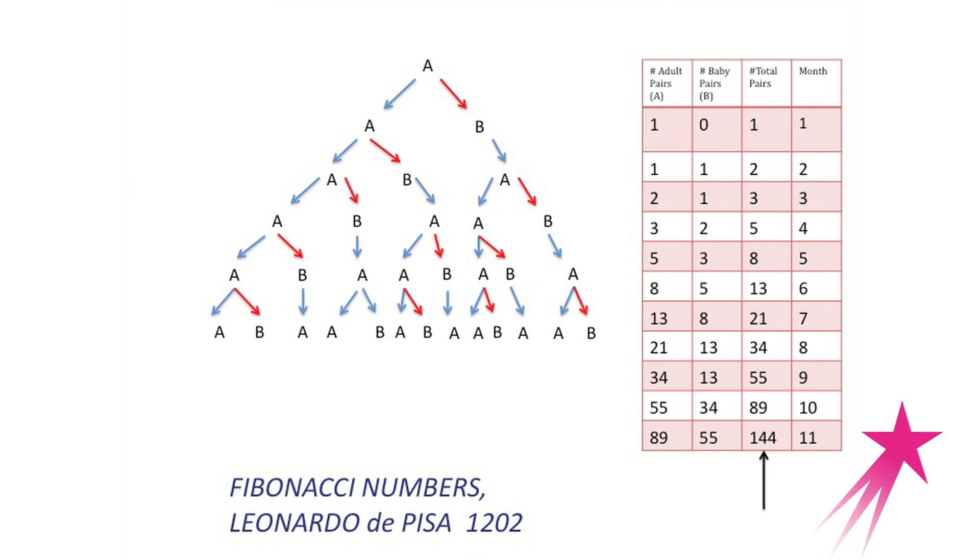The original problem asked how many rabbits are there after 11 months. If you were to count all of the A's and B's on this tree and continue it down—if you'll notice at each level, the total numbers of A's and B's correspond to the total number of rabbits, where A is adult and B is baby. If you were to continue this tree, I've only taken it down to the sixth month, but if I continued it to the 11th month, I could count all the A's and B's and get 144. But because one notices this pattern, I could calculate without counting all of the rabbit pairs by this tree method.